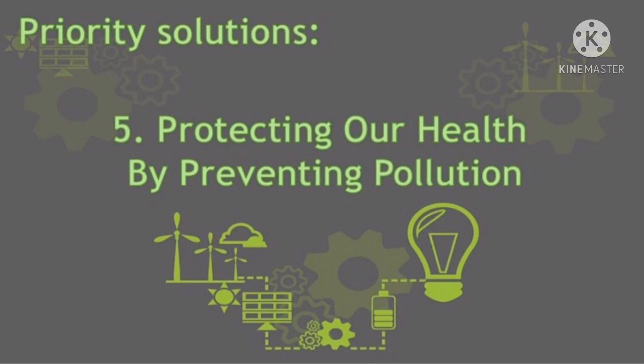Priority solution number five: Protecting our health by preventing pollution. We must reduce or eliminate the dangerous chemicals in the products we buy, the food we eat, and the air we breathe. Toxic chemicals in the environment such as mercury, lead, and certain man-made chemicals have been linked to cancer, birth defects, and brain impairments. Reducing or eliminating the load of these dangerous chemicals can help reduce the toll of human disease and suffering.